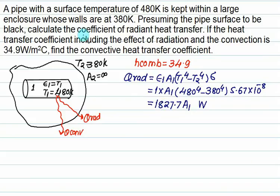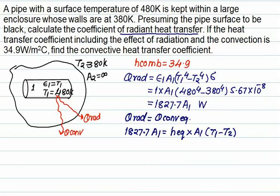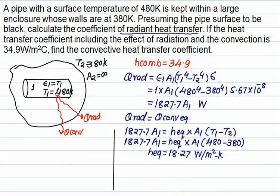To find the equivalent coefficient of radiant heat transfer, we equate Q_radiation to the equivalent convection form. So 1827.7·A1 = h_equivalent × A1 × (T1 minus T2). With A1 cancelling, substituting T1 = 480 and T2 = 380, we get the equivalent heat transfer coefficient h_equivalent equals 18.27 W/m²·K.